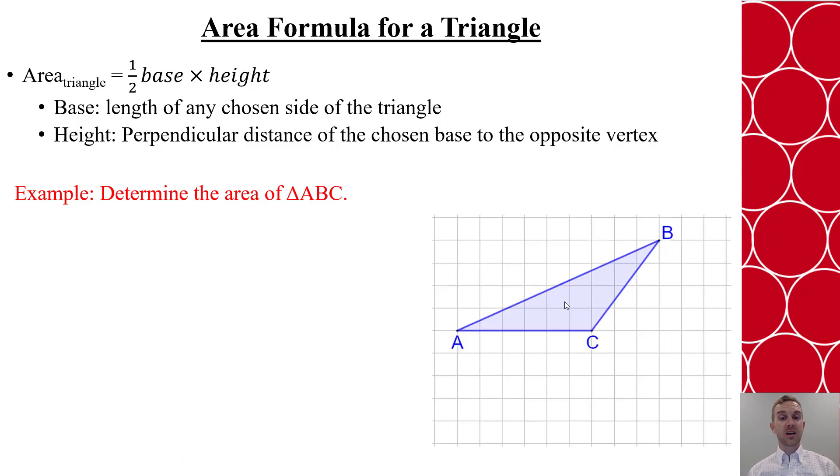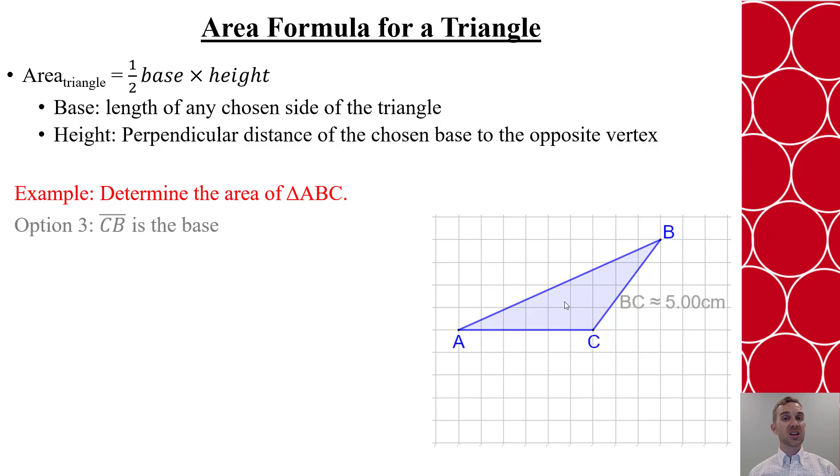Now, if I can do it with AB, I could also do it with side BC as the base. I can either try to use Pythagorean theorem using the grid to help me get that measurement exact, or I can use something like GeoGebra to give me an approximate measure of 5 centimeters for BC.